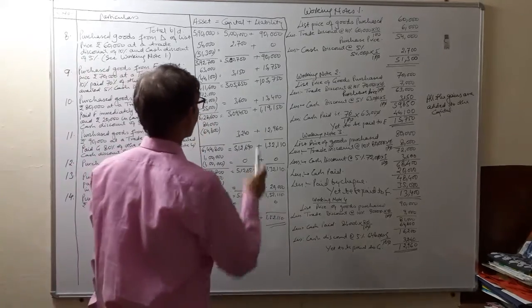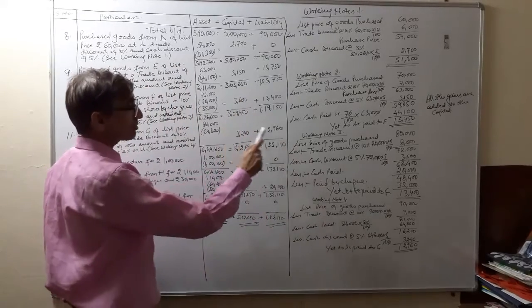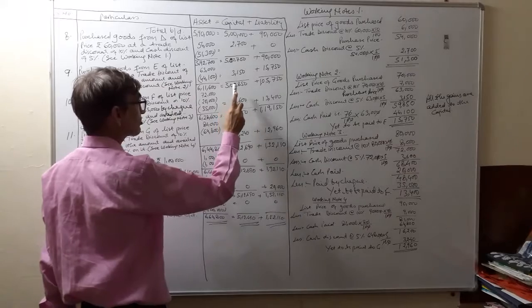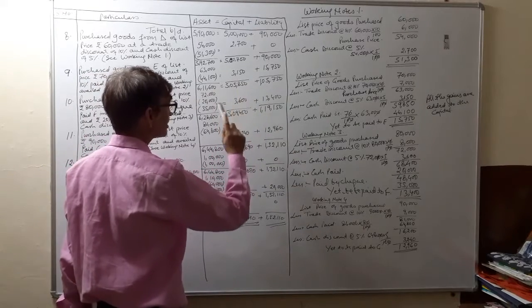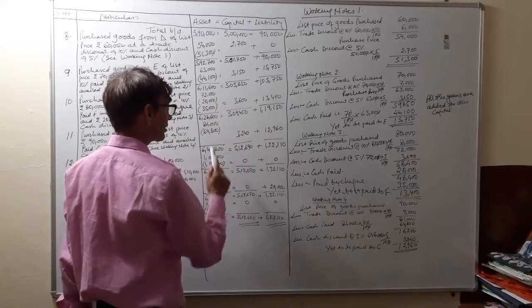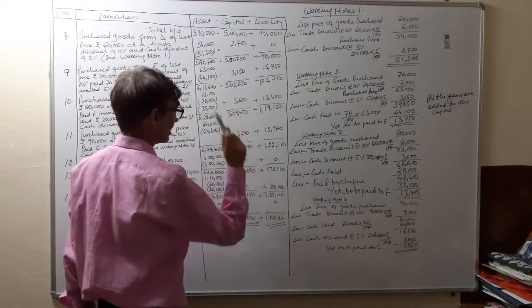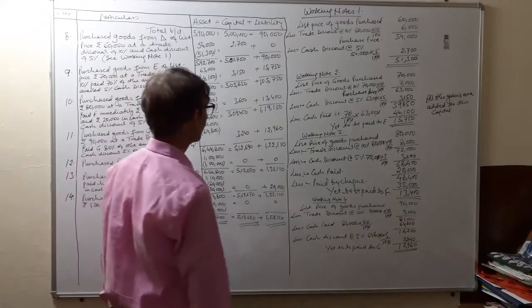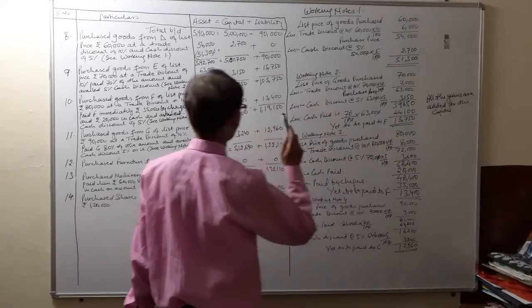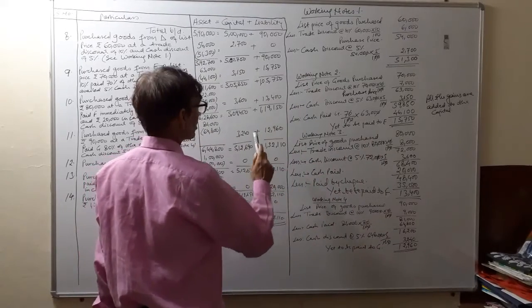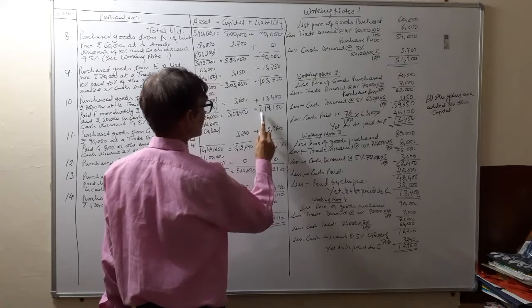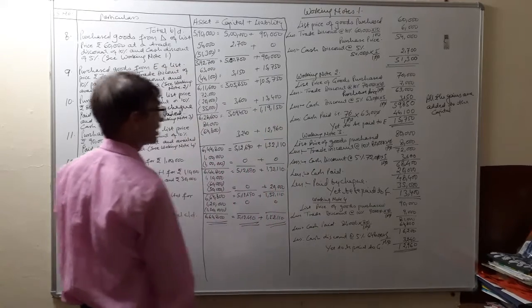We have earned a profit of rupees 3,600. The capital balance was 5 lakh 5,850; adding 3,600 gain to the capital gives 5 lakh 9,450. The liabilities will come to rupees 1 lakh 19,150.